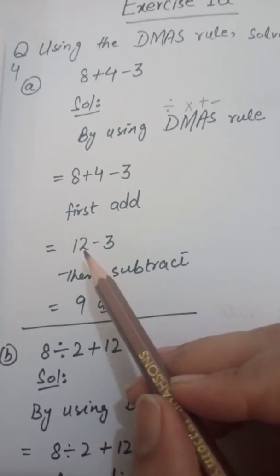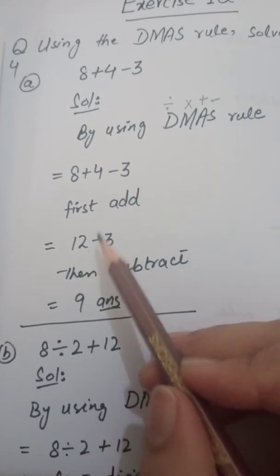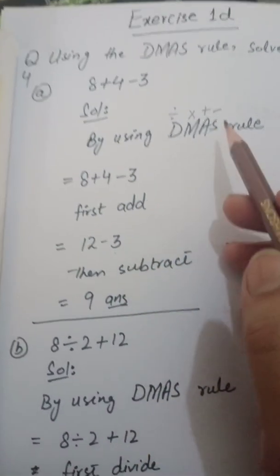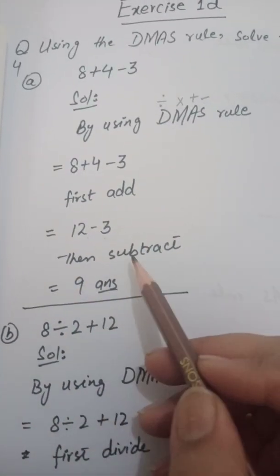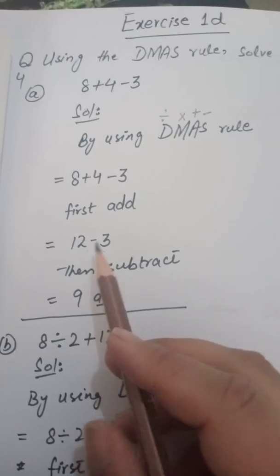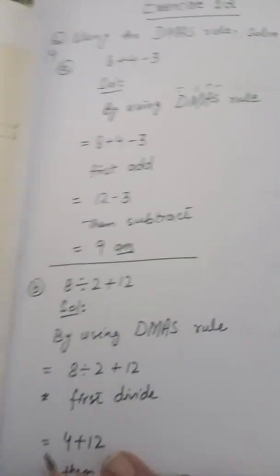Okay students, so 8 plus 4, we will get 12, minus sign as it is, and 3 as it is. Now what do we have to do, subtract. Then we will subtract. Okay. So 12 minus 3, we will get 9.